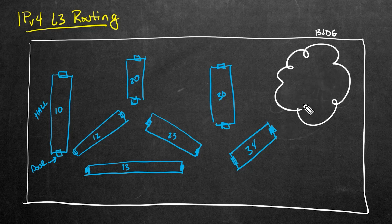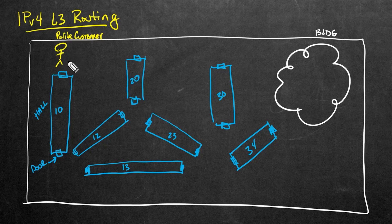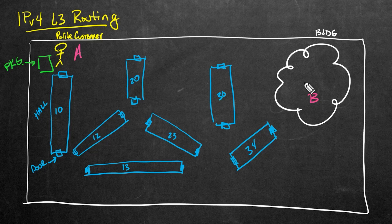So let's imagine we have a person at the end of this hall — maybe a customer of the company, a polite customer. Here we have this really polite customer, and let's imagine they are at point A here in the building. Let's imagine they want to deliver a package from point A to point B in the building. This customer does not know all the details about our hallways and passageways inside of our building.